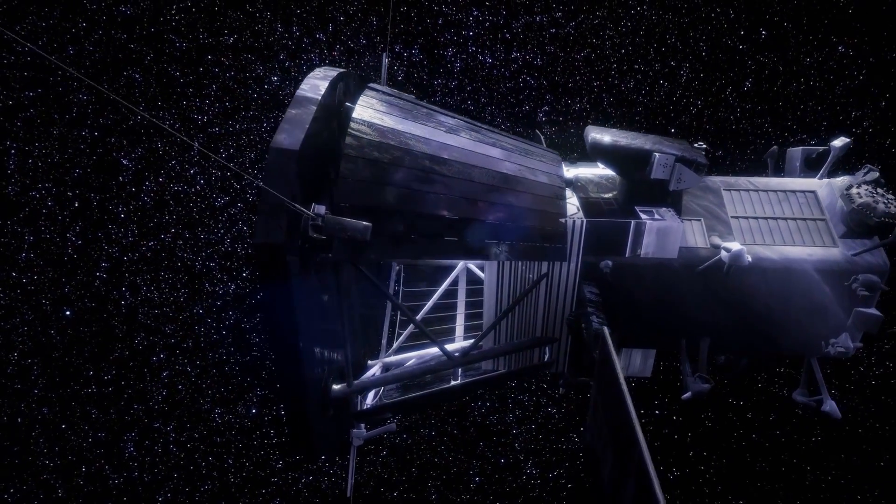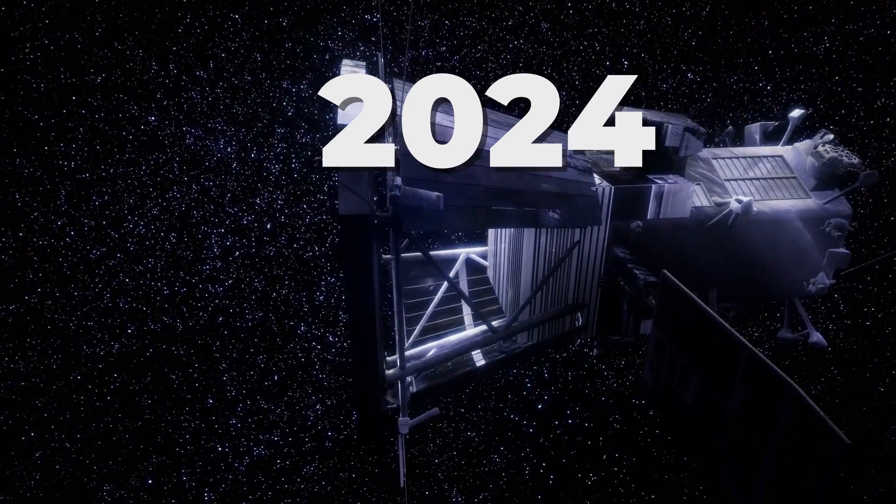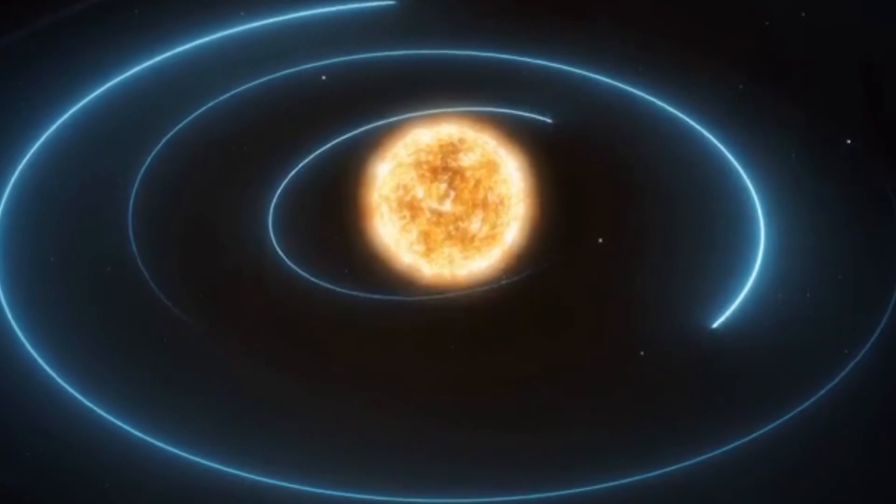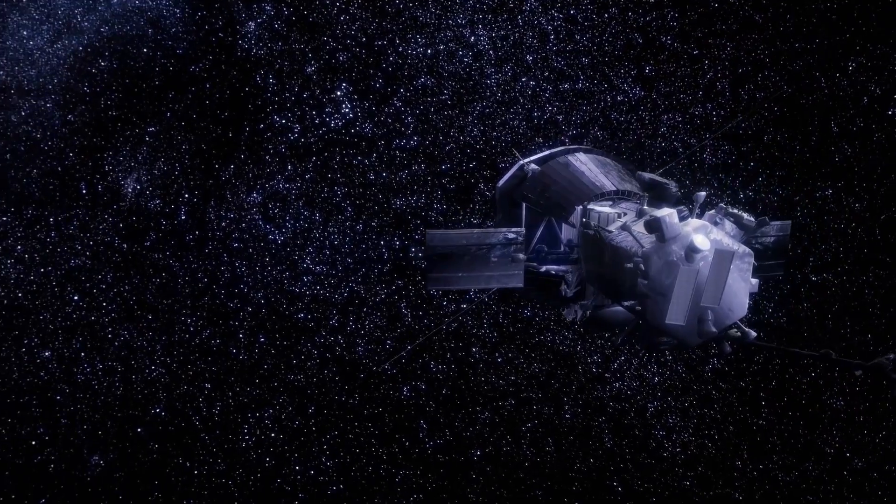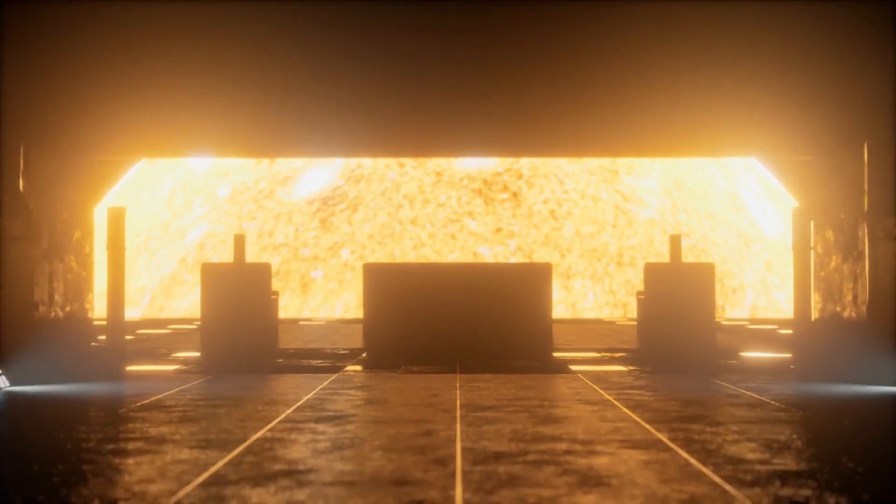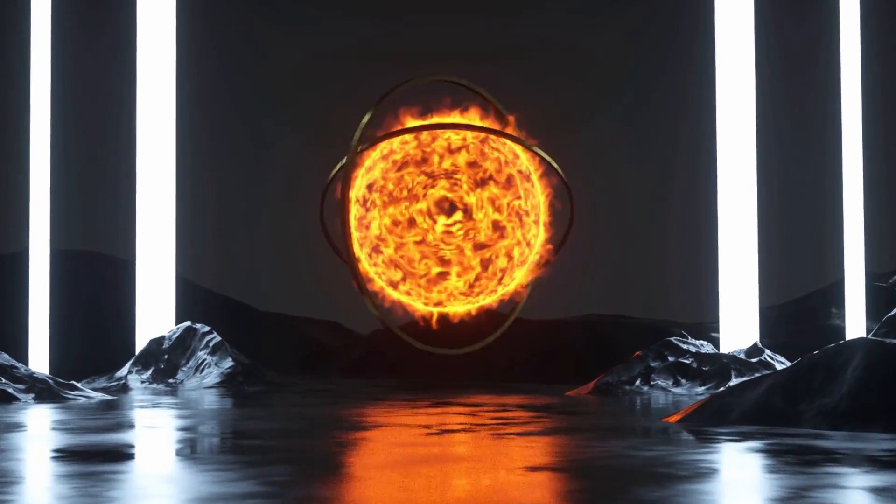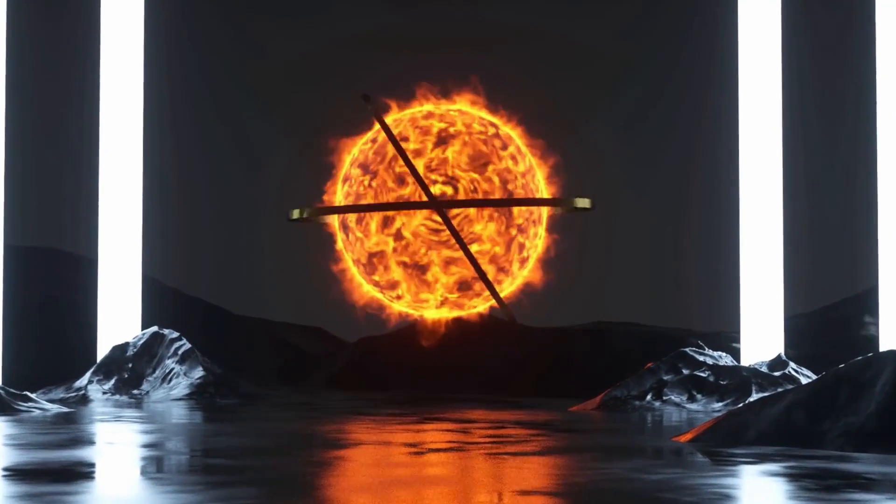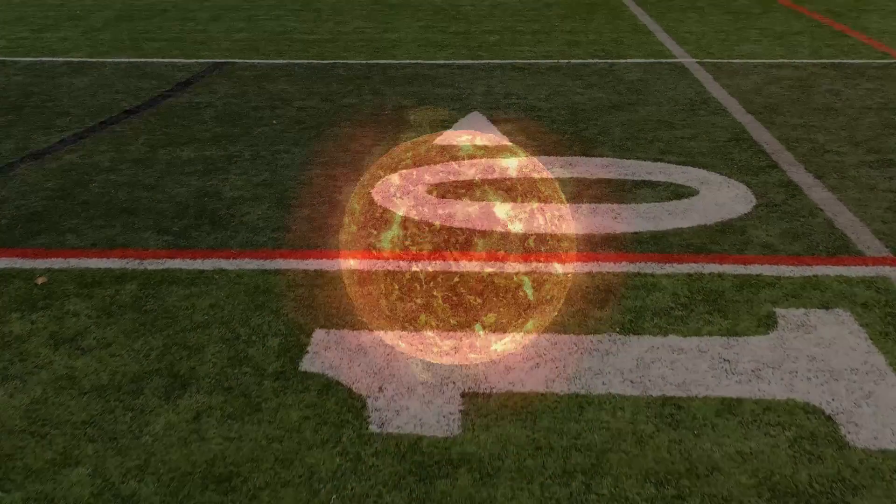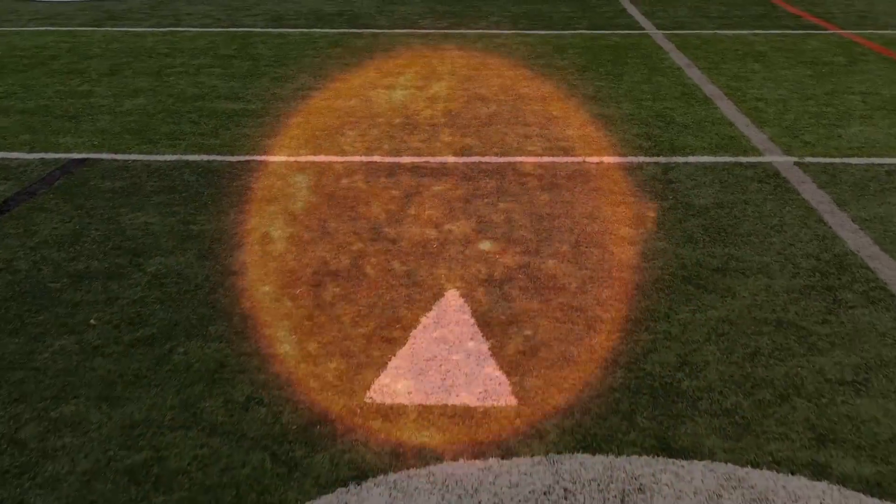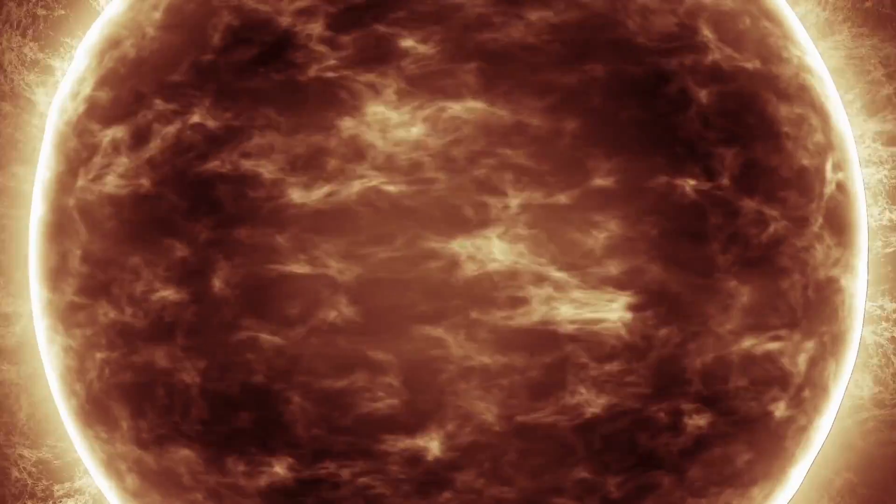By the time Parker finishes its journey in 2024, it will have made 21 close approaches to the Sun over the course of seven years. At its closest flyby, the probe will orbit within 3.9 million miles of the Sun's surface. Scientists equate that with being on the four-yard line of a football field while the Sun rests in the end zone. Yes, it really is that close.